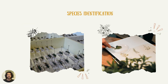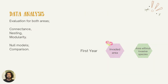Species identification will be done by specialists and taxonomists. For the current data analysis, we separated species of plants and bees into morphotypes.